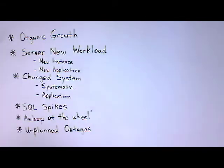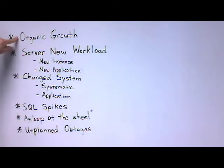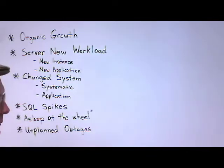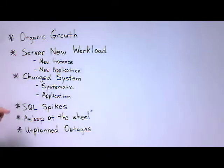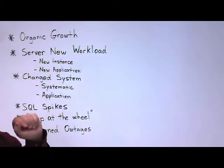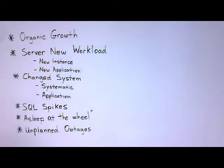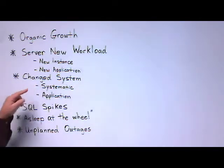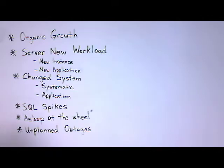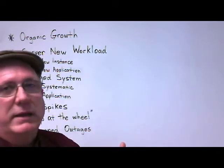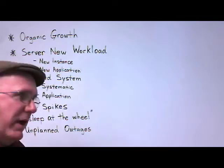Let's review what we previously discussed. We talked about organic growth, where a system over time is going to grow — you would usually see this in terms of data growth. The second area is new workload, where there would be new instances or new applications added to the system. The third is a changed system, which could be a systematic change to the underlying operating system, something changed in the DB2 LUW instance, or an application change — such as changing the way an application works, removing functionality, or changing the way SQL would be operating.